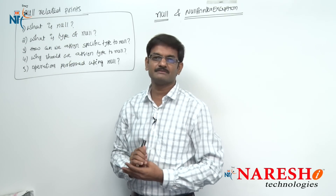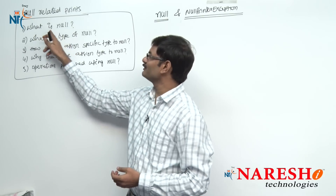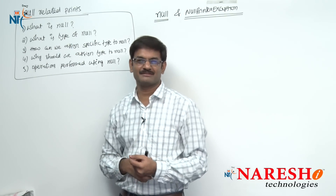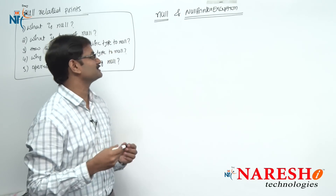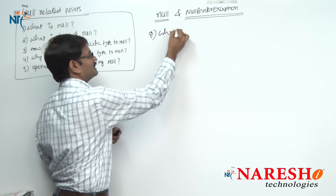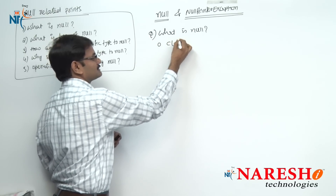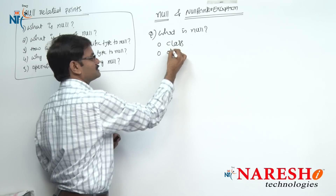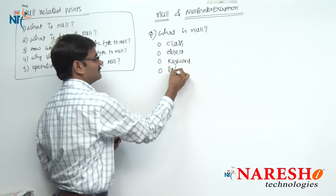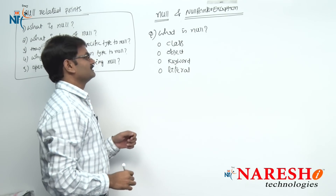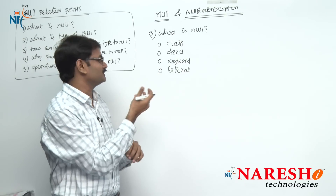Let us start working on these points. Are you ready? So, first point — let us see what null is. Give your idea: what is null? Let me give some options. What is null? You will get options in the interview room. First option: null is a class. Second option: null is an object. Third option: null is a keyword. And fourth option: null is a literal. These are the four options. If you got this in an exam, what would you choose? Try to choose first and I will tell you later.